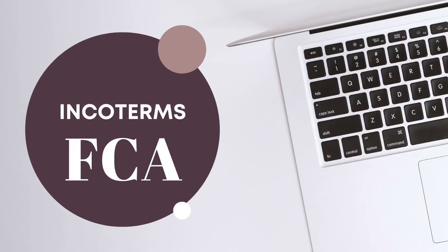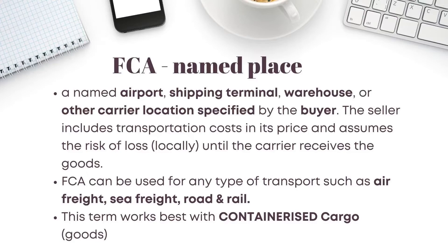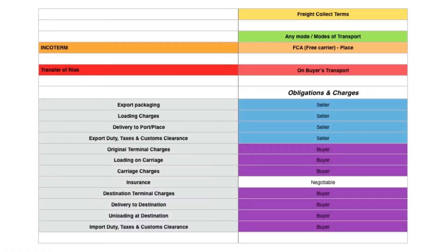Moving on, today we will touch on FCA — this means Free Carrier — where the seller's obligations are to deliver the cargo to an agreed upon port known as the named place. Usually this term is used in conjunction with containerized goods. In simple terms, the seller is responsible for exporting the shipment and all steps before that. The buyer assumes responsibility of the cargo once the goods are ready to be loaded onto the carrier.